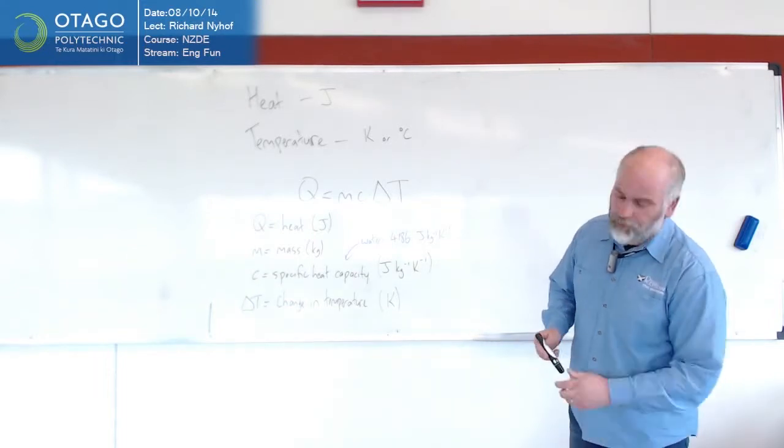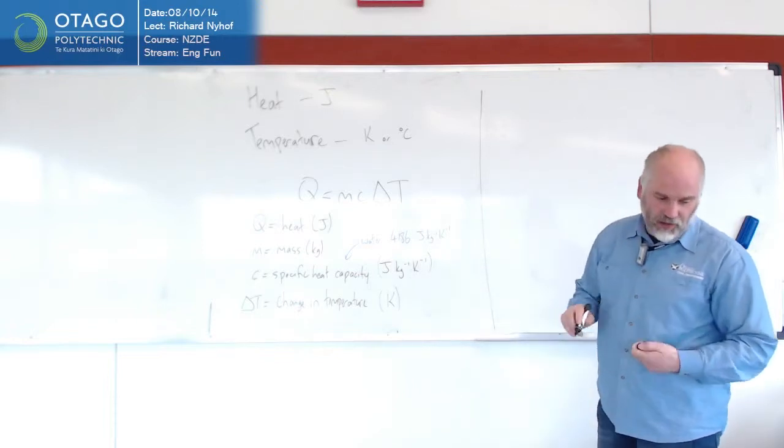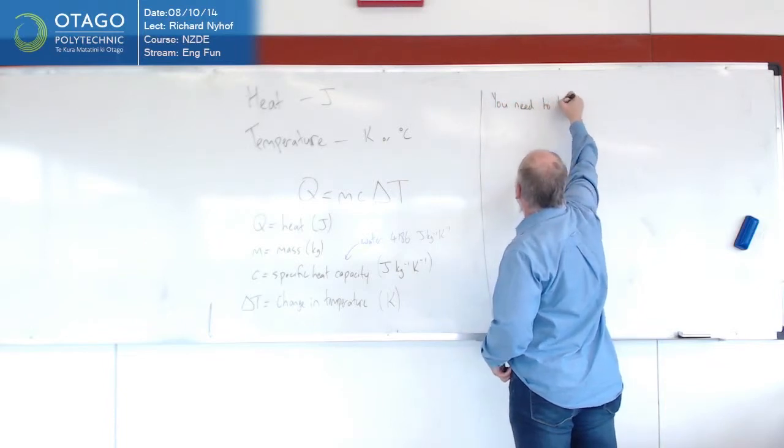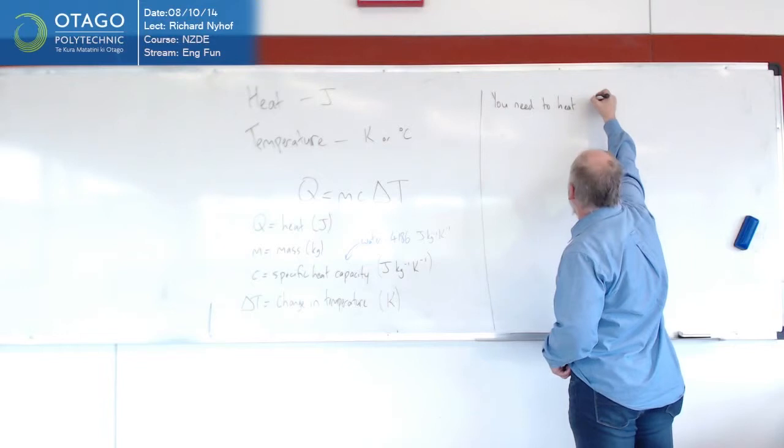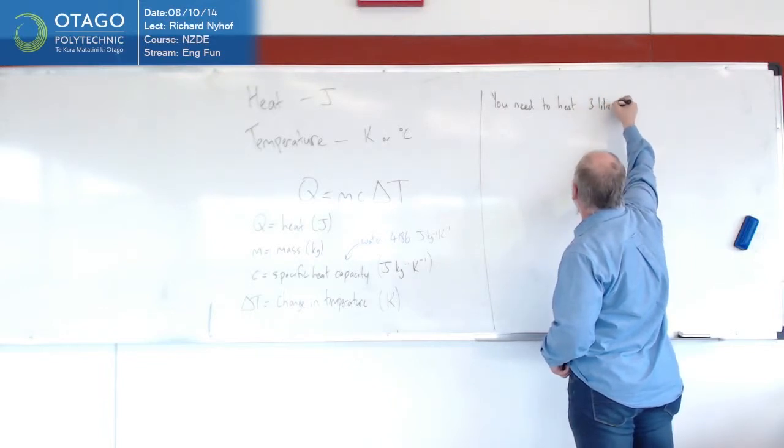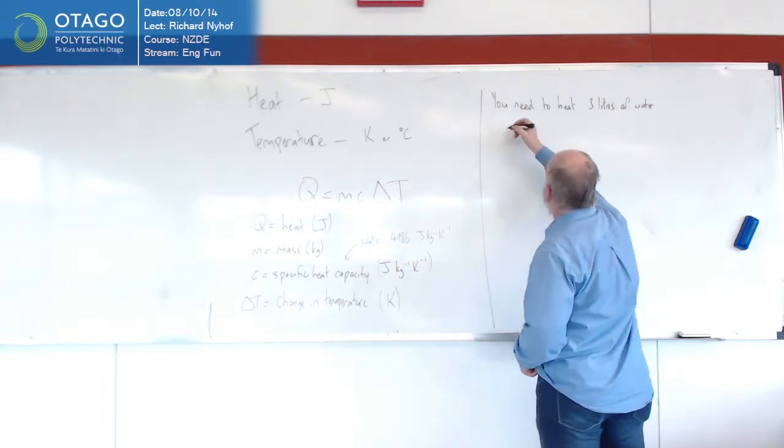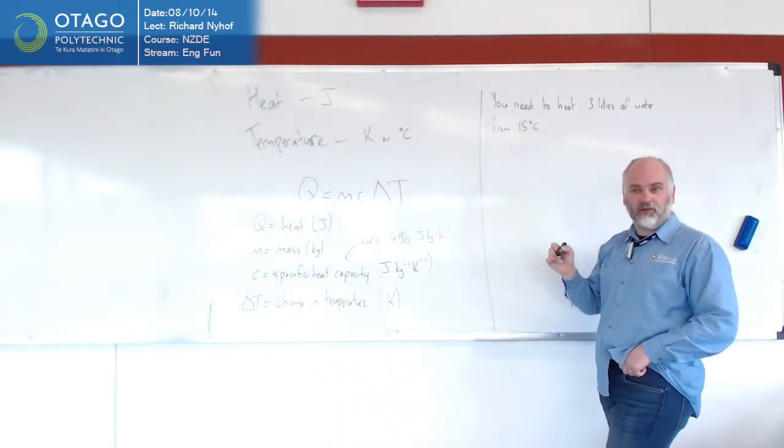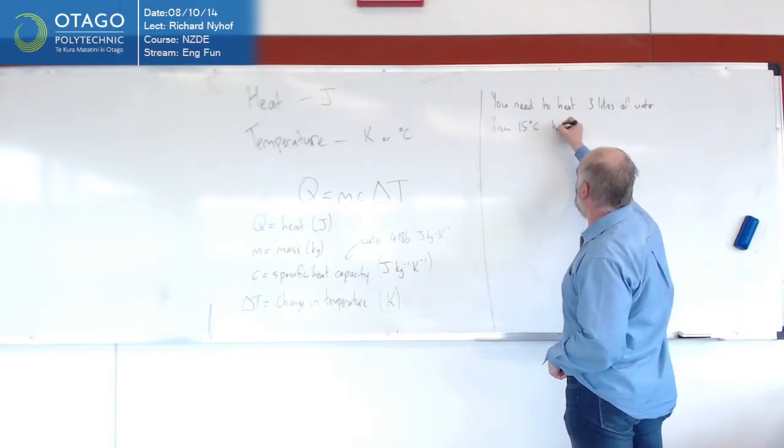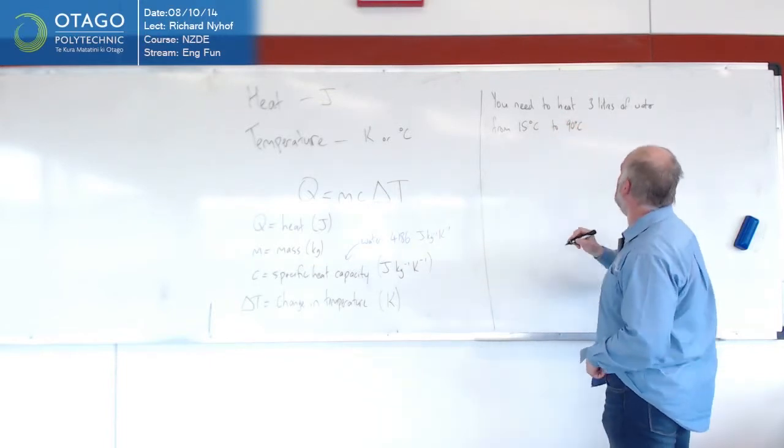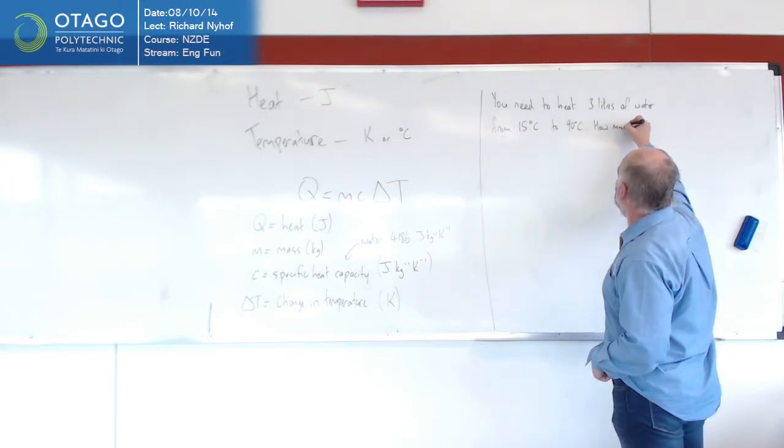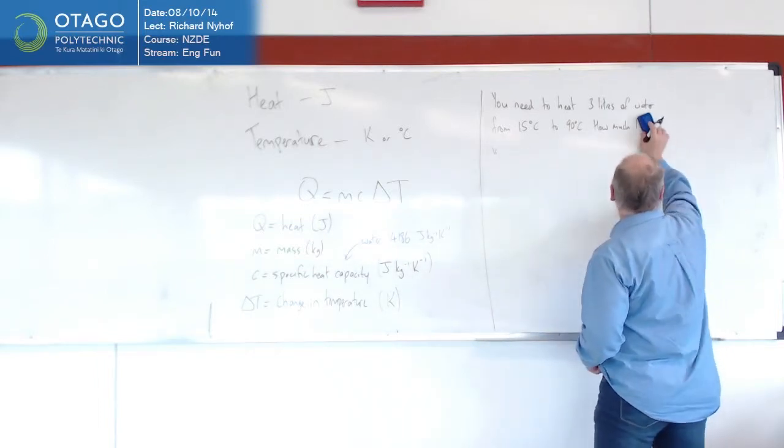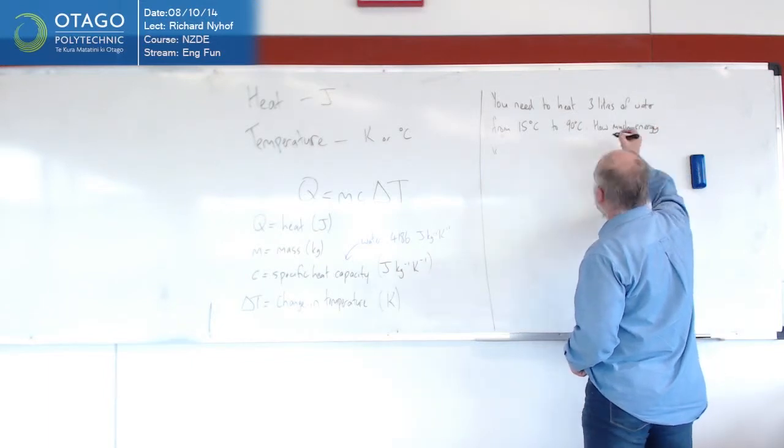Let's do an example. Think about the kettle example. You need to heat three litres of water from what comes out of taps, 15 degrees Celsius, probably not a tap in Dunedin, not in winter anyway, to 90 degrees Celsius to make the cup of tea. How much energy is required?